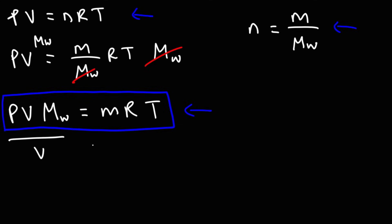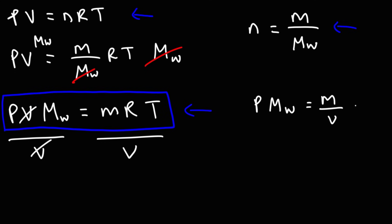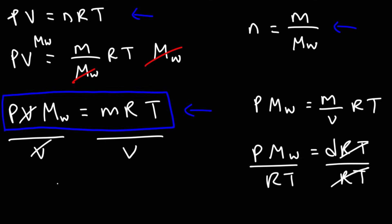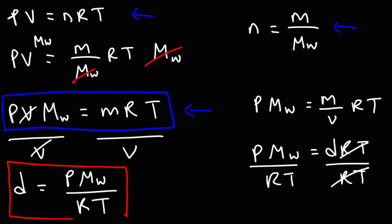Dividing both sides by V, we get pressure times molar mass equals m over V times RT. Since m over V is density, we can solve for density: the density of a gas equals pressure times molar mass divided by RT. If you know the molar mass, you can calculate the density. Conversely, you can use the density to calculate the molar mass and help identify what kind of gas you have.